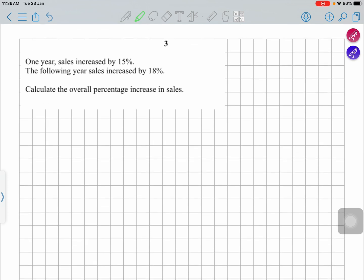What does this example say? For one year, the sales increased by 15%, but they didn't give you what is the original amount. They only say the sales increased by 15%. The following year, the sales increased by 18%, so now we need to find the overall percentage increase in the sales.